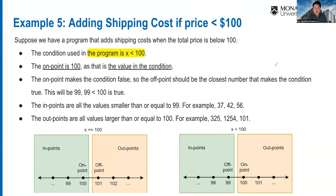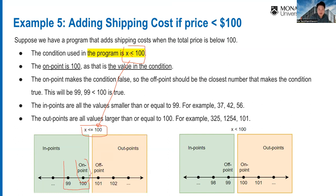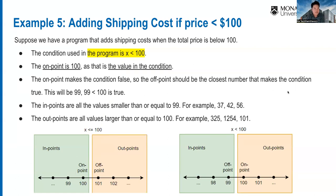If the specification changes to x ≤ 100, then 100 is still the on point but is now in the valid (in-point) class. We test 99 and 100 on one side, and 101 and 102 on the other side — testing both sides of the boundary. That's boundary value analysis in a simple example.